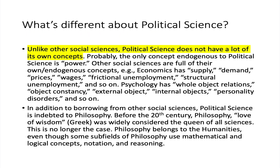What's different about political science compared to other social sciences? Unlike other social sciences, political science does not have a lot of its own concepts. Probably the only concept that is endogenous — that is, internal to political science — is the concept of power. In economics, for example, you have supply, demand, prices, wages, frictional unemployment, structural unemployment, and so on.